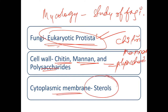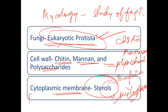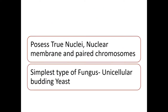The cytoplasmic membrane of fungi is made up of sterols. There is also a bacterium whose cytoplasm is made up of sterols — that is Mycoplasma. This is very important to remember: Mycoplasma bacteria have sterols. Similarly, fungi cytoplasm is made up of sterols.